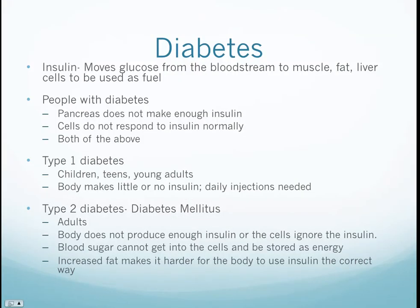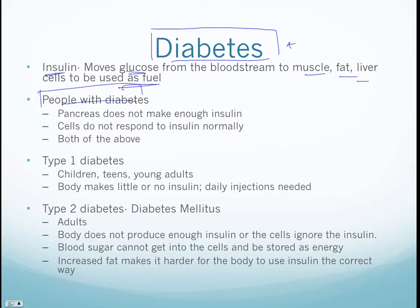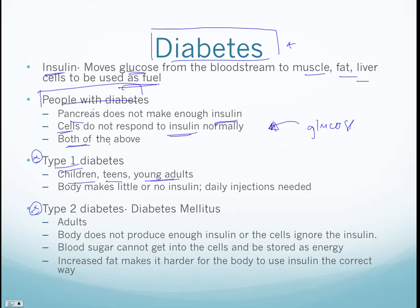Diabetes is a well-known disorder. Insulin is needed to move glucose from the bloodstream to muscles, fat, and liver for fuel. With diabetes, the pancreas may not make enough insulin, cells do not respond to insulin normally and cannot take in glucose, or both. Type 1 diabetes is congenital, targeting children, teens, and young adults — the body makes little to no insulin and daily injections are needed for life.